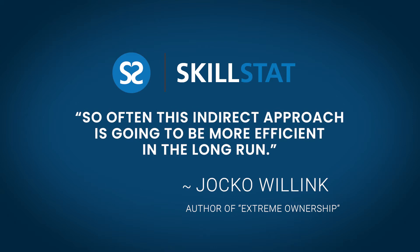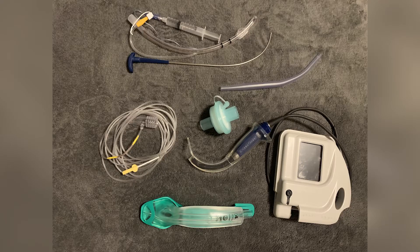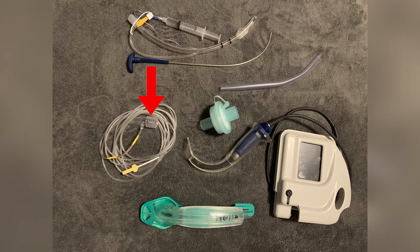With the hyperangulated video laryngoscope, the equipment has been updated and allows for a more team-based approach to securing the airway. In this picture are the items used in indirect laryngoscopy, including the IGEL Rescue Superglottic device, the GlideScope hyperangulated video laryngoscope, and the end-tidal CO2 monitor.